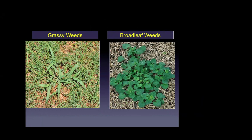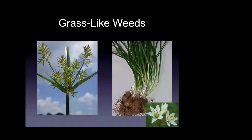Weed identification books are typically broken down into two main categories: grassy weeds versus broadleaf weeds — monocots or dicots. There's also a third category, a miscellaneous section for grass-like weeds. This includes sedges, wild garlic, wild onion, and plants like Star of Bethlehem. These plants typically don't fall under grasses or broadleaf weeds but belong in that third grass-like weed category.